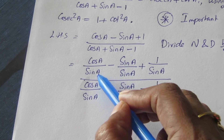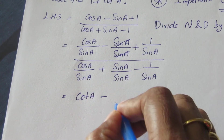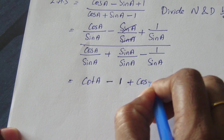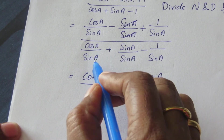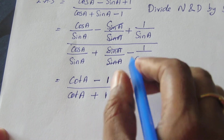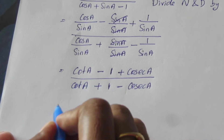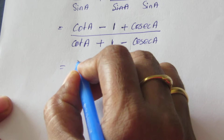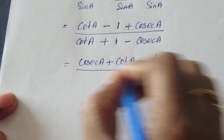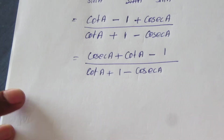Now, cos a by sin a is cot a. Sin a by sin a cancels to 1. And 1 by sin a is cosec a. So the numerator becomes cot a minus 1 plus cosec a, and denominator becomes cot a plus 1 minus cosec a. Now we rearrange these terms.